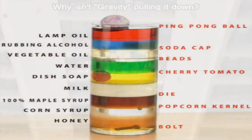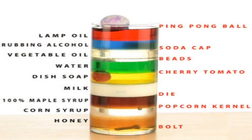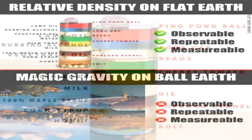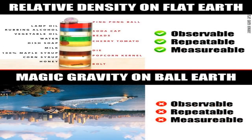Rather than contriving this counter-intuitive nonsense they call gravity, let's look at the world as if it's a flat plane going on infinitely up and infinitely down. If one assumes the universe is infinite, then there is an infinite amount of matter, and to arrange this infinite matter to form what we observe to be our reality, there is a density gradient in which we exist — where all matter below us is more dense and all matter above us is less dense. Rather than assume a gaseous atmosphere hovering around a ball in a vacuum — which violates many laws of physics — instead imagine we live on an infinite plane with a density gradient.